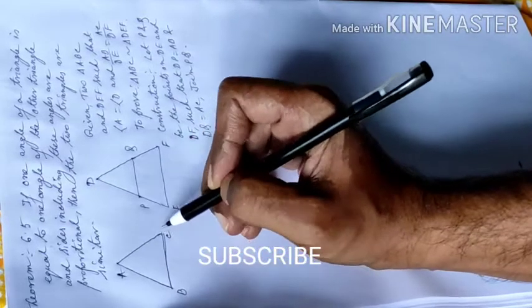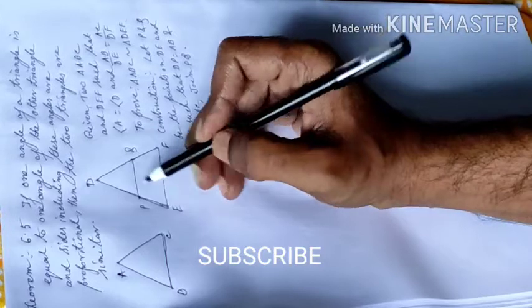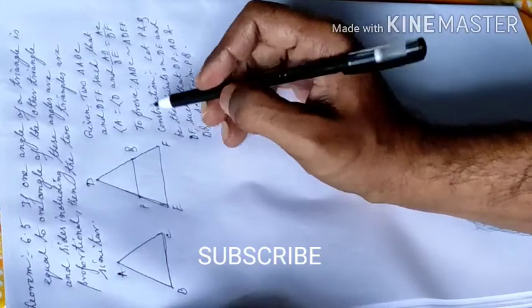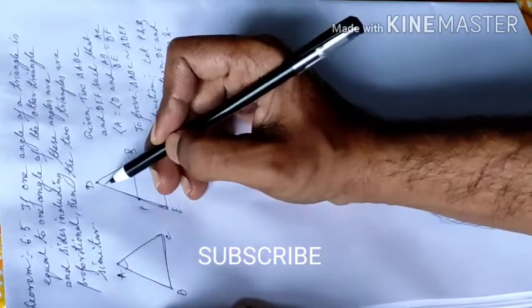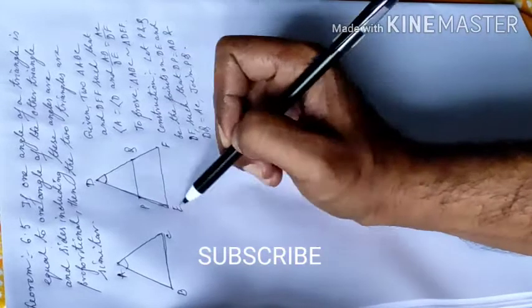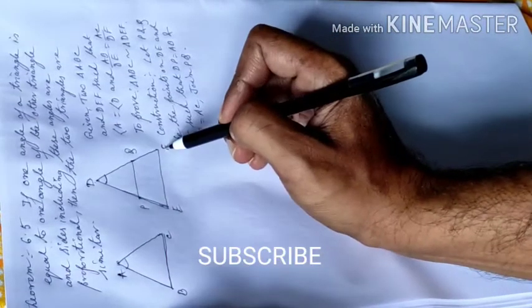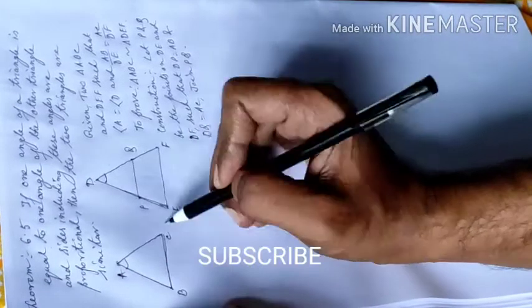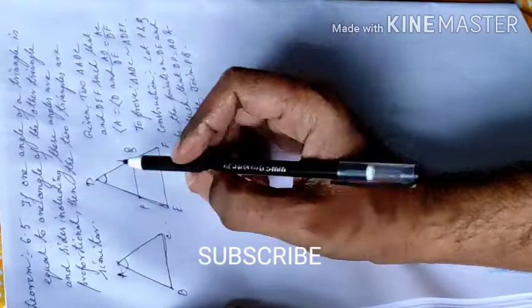Given: angle A is equal to angle D, and AB by DE is equal to AC by EF. To prove: triangles ABC and DEF are congruent triangles. Construction: